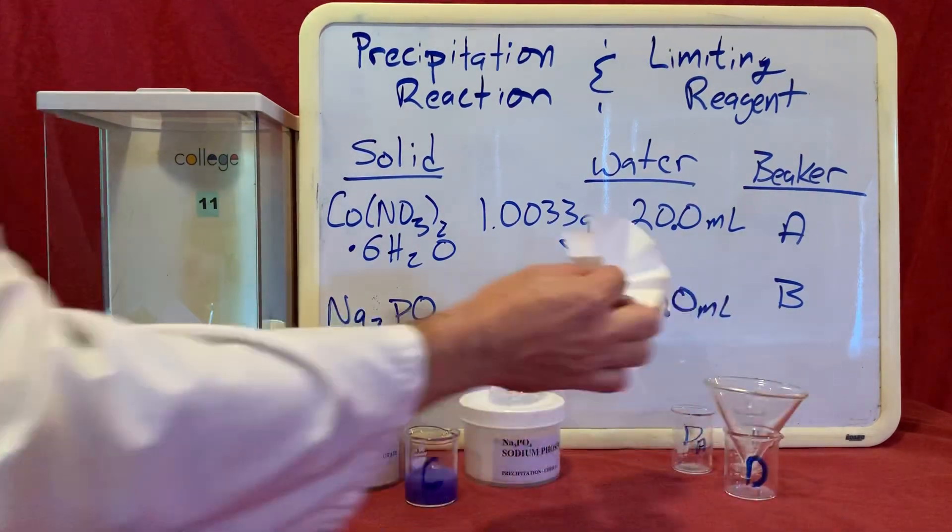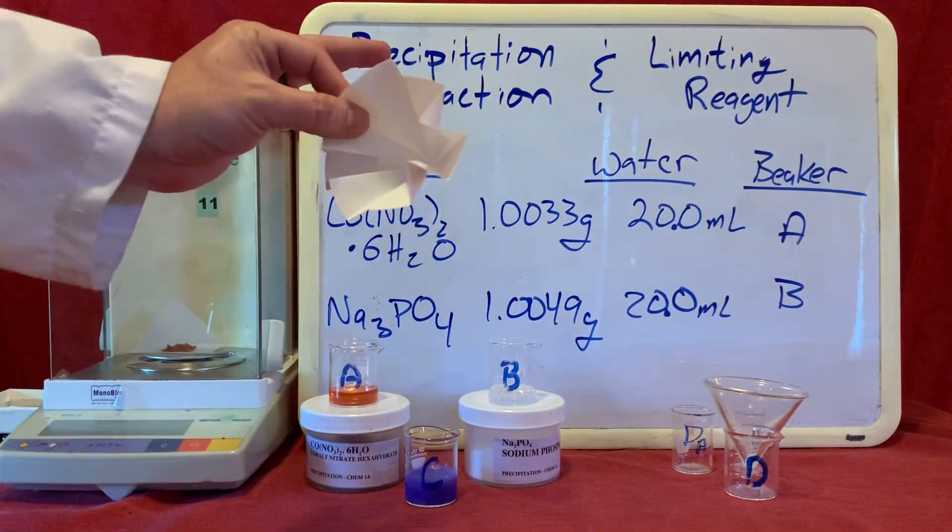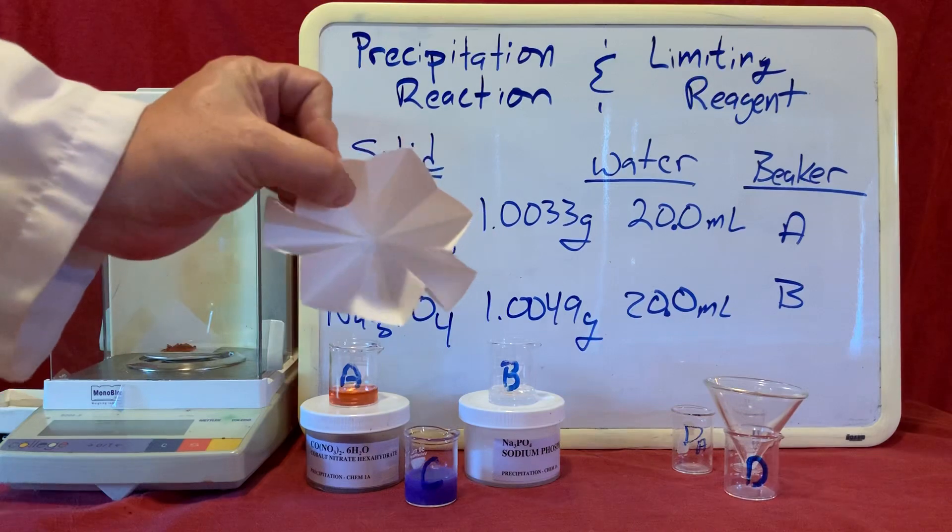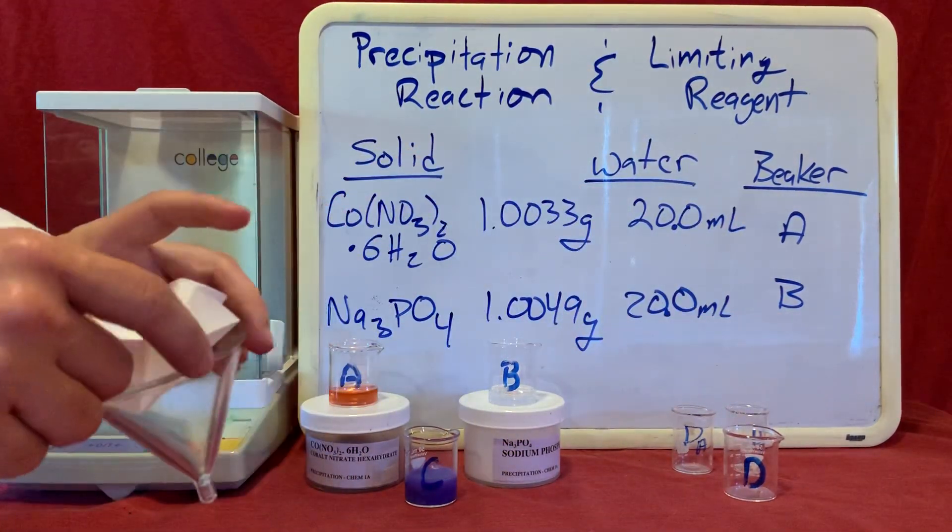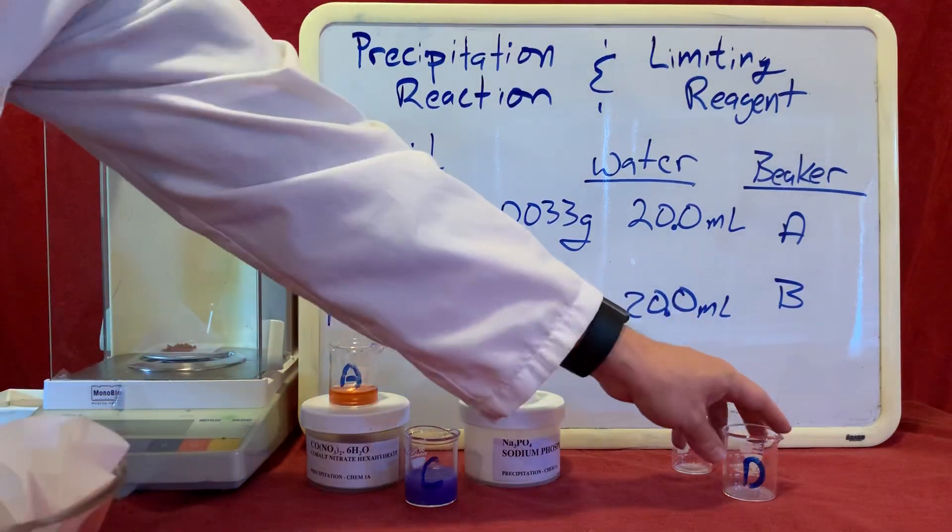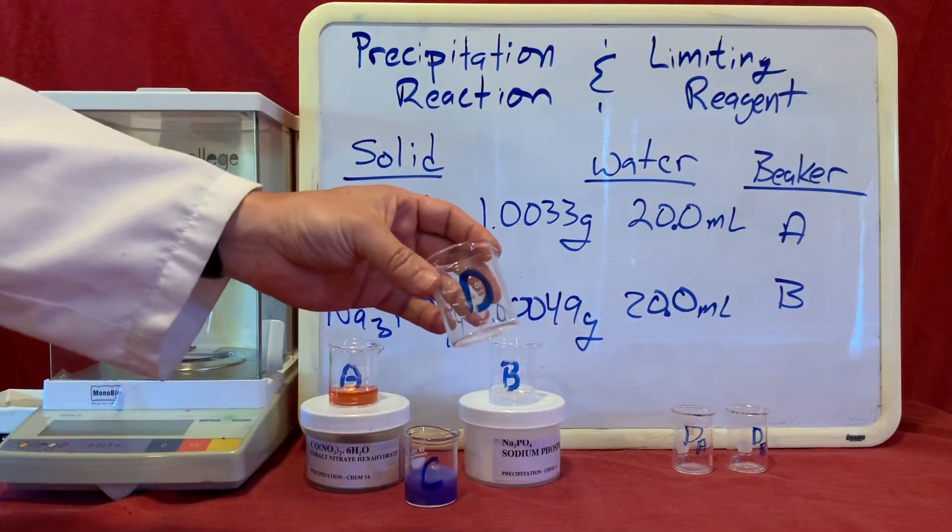I'm going to take a piece of fluted filter paper, which is just a flat piece of filter paper that's been folded up, a funnel, and an additional beaker, which we're going to call beaker D.